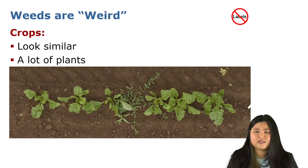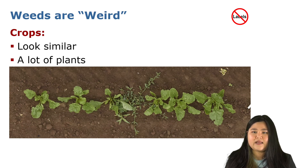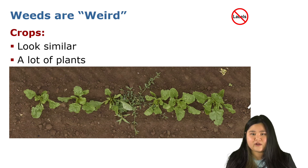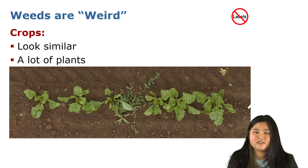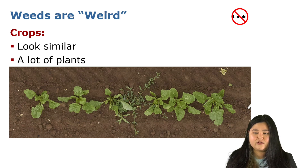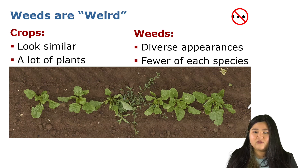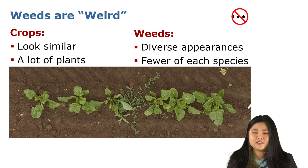Our approach requires no labeling because we instead leverage a heuristic that is common in agricultural fields. Specifically, we know that crop plants belong to the same species in monoculture fields, meaning that they will look similar to each other. Also, crop plants are intentionally sown in the field, and therefore there are a lot of crops. In contrast, weed plants belong to a myriad of species and therefore they mostly look different from each other. Since they are also not intentionally sown in the field, they exist in smaller numbers per species.